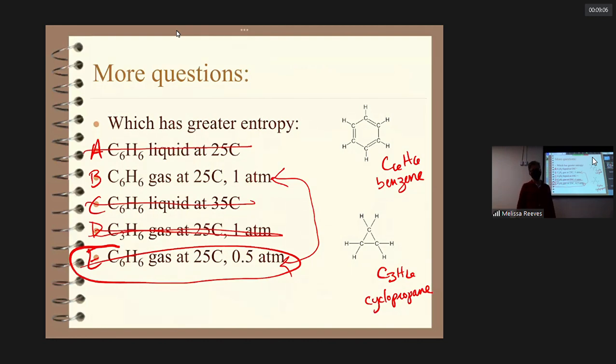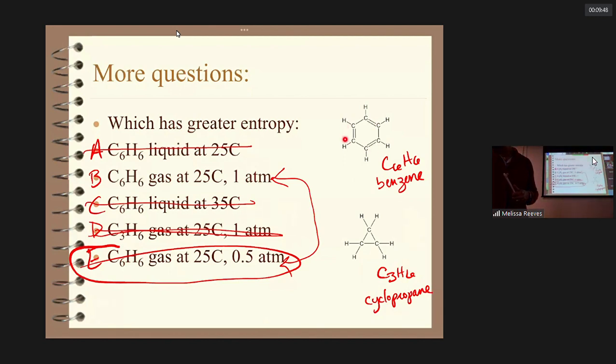No, I just lied to you. Low pressure is a large volume. I just turned myself around. Large volume means more microstates. Why would you not choose this one? Because this one is more complex. More complex has greater entropy.